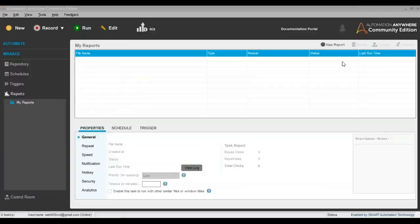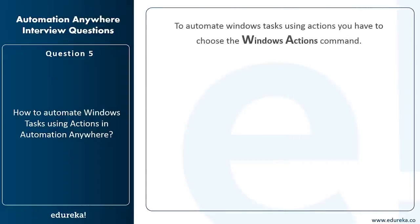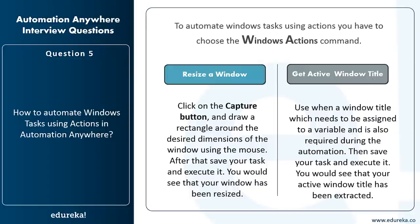How do you automate Windows tasks using actions in Automation Anywhere? You choose the Windows Actions activity from the activity pane. Available actions include resize, get active window title, maximize, minimize, close, and open a window. For example, to resize a window, click the Capture button, draw a rectangle around the desired dimensions using the mouse, then save and execute the task. To get the active window title, assign it to a variable, save, and execute. Let me demonstrate in the client — I'll search for Windows Actions, drag and drop Resize Window, select the Internet Explorer window, click Capture, draw the dimensions rectangle, and save.